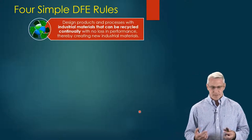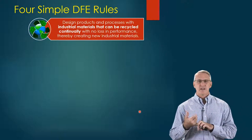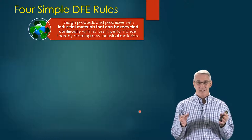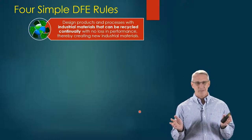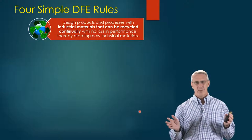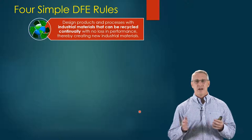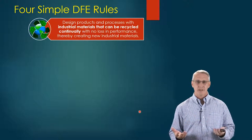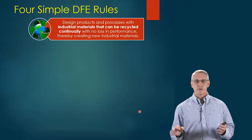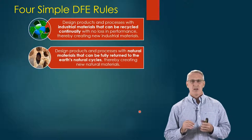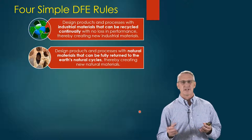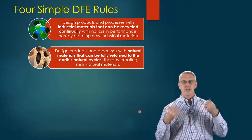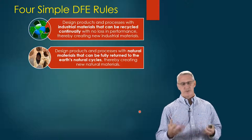Some simple rules. One: design products and processes with industrial materials that can be recycled continually. If you can't do it continually, you're not quite getting there — at some point you have to stop. With our population growth and how much more people are consuming, we have to be doing better than that, with no loss in performance. That way we can make new industrial materials, and there's a whole world of research going into making new materials. Two: design products and processes with natural materials that can be fully returned to the earth's natural cycles — the bio cycle. This way we can keep creating new natural materials and wouldn't run out, as long as we can produce faster than we use.